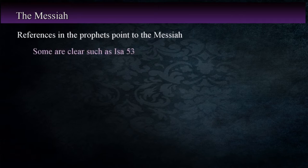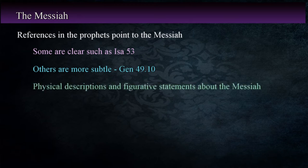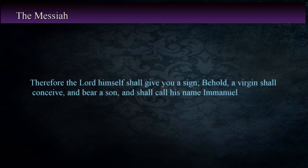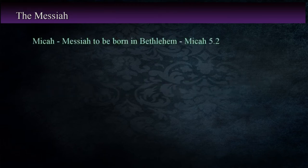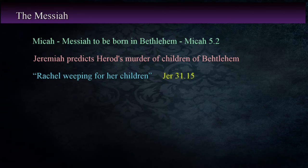Some of these are plainly stated and correspond to events in the New Testament, such as we see in Isaiah 53. Others are more subtle, such as the statement by Jacob as he blesses his sons that the scepter shall not depart from Judah in Genesis 49:10. During the active ministry and writing of the prophets, we find physical descriptions and figurative statements about the coming of the Messiah. Perhaps the most well-known of these is Isaiah's prophecy of a sign: 'Therefore the Lord himself shall give you a sign. Behold, a virgin shall conceive and bear a son, and shall call his name Emmanuel' in Isaiah 7:14. Micah reveals the birthplace of the Messiah as Bethlehem in Micah 5:2, and Jeremiah foretells of Herod's murder of the children of Bethlehem — in a figurative sense, as he refers to Rachel weeping for her children — in Jeremiah 31:15. We can compare statements about the Messiah with events recorded in the Gospels and see that they are fulfilled in the life, death, and resurrection of Christ.